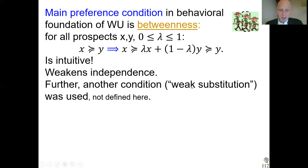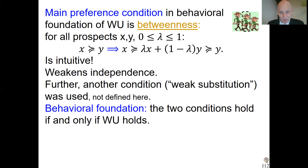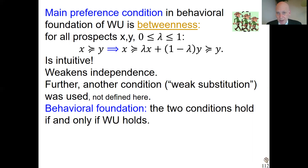There's another condition called weak substitution, which I won't define here. Those conditions, given weak ordering, continuity, and the usual assumptions, hold if and only if the weighted utility model holds. The original version of prospect theory didn't have a behavioral foundation — which could have been a signal that there were some problems. This theory did have a behavioral foundation, published in 1983. Later it turned out that John Quiggin had already published something related in 1982, though it was not widely known for a long time. So for a long time this was considered the first behavioral deviation from expected utility with a preference foundation.